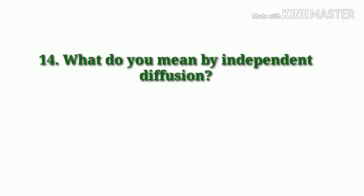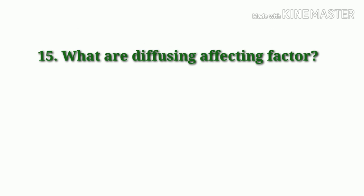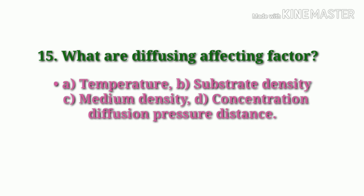What do you mean by independent diffusion? When a system contains two or more diffusing particles, the tendency of all particles to diffuse according to their own partial pressure or concentration is known as independent diffusion. What are the factors affecting diffusion? Temperature, substrate density, medium density, concentration, diffusion pressure, and distance.